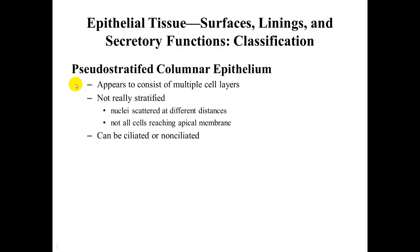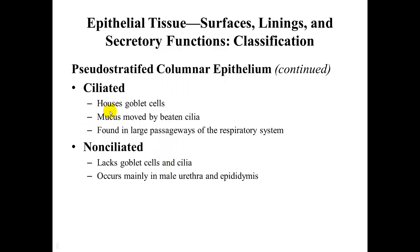Pseudostratified columnar epithelial is the tissue that appears to be multiple cell layers even though it is only one, because each cell is attached to the basal membrane. It can be either ciliated or non-ciliated. The ciliated type houses goblet cells, produces mucus that is moved by the cilia, and is found in passageways of the respiratory system such as the trachea. The non-ciliated type lacks goblet cells and cilia, and is found mainly in the male urethra and epididymis.